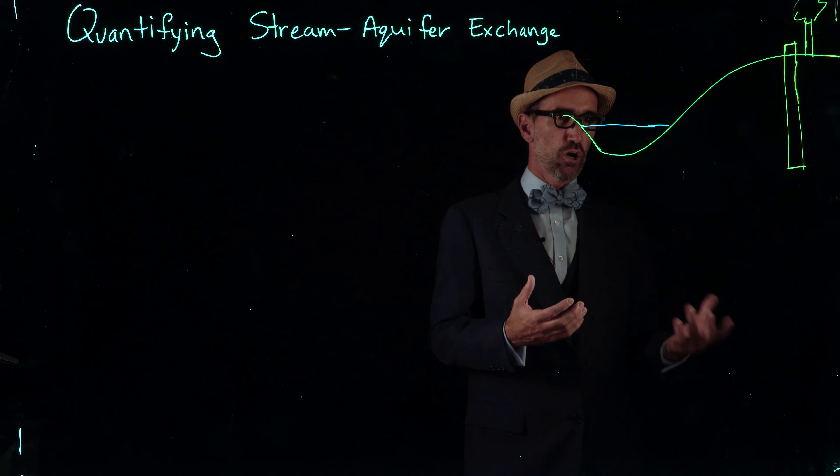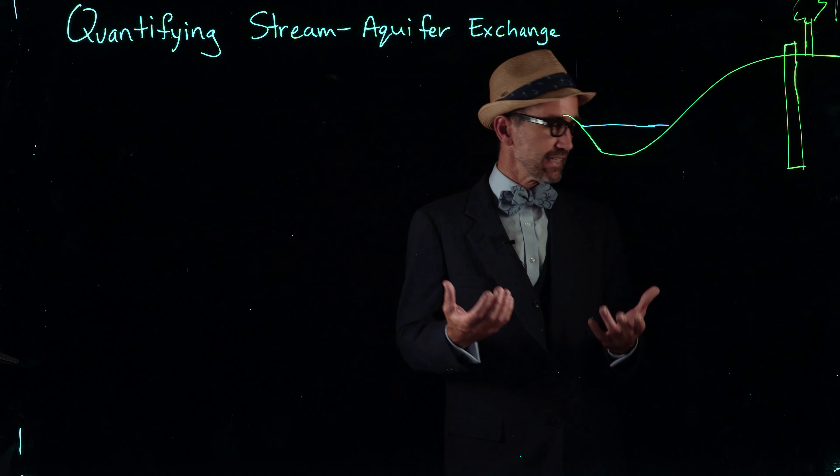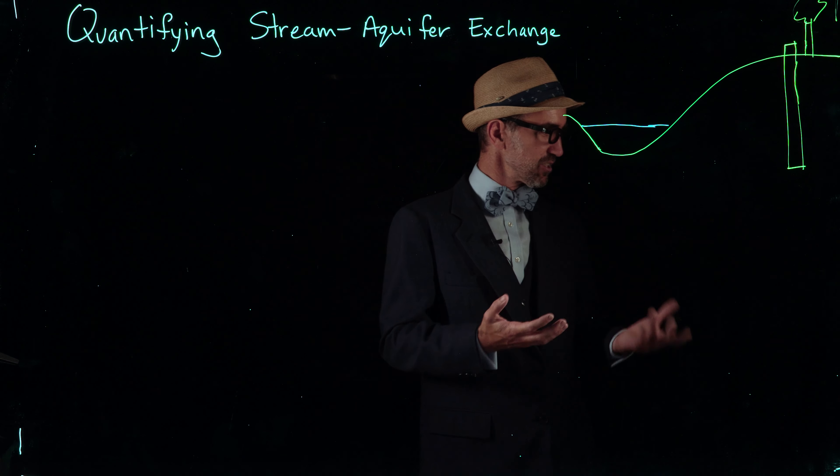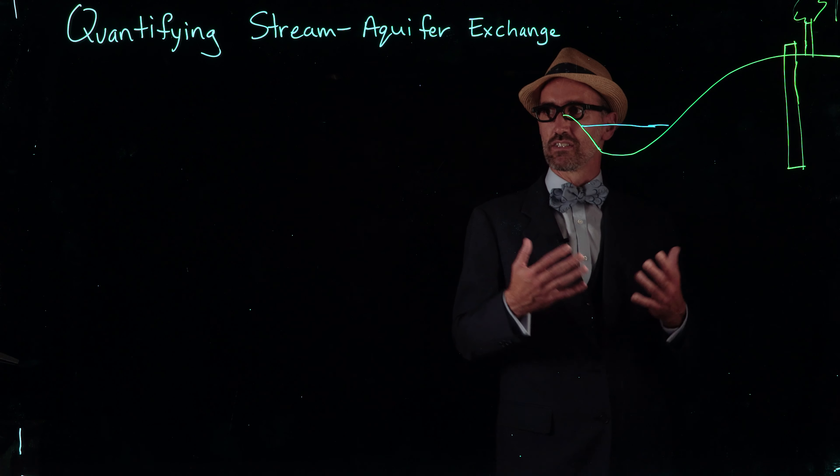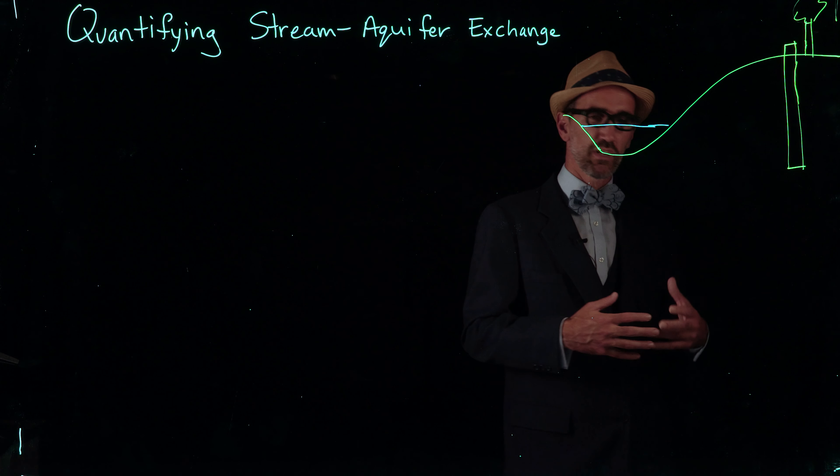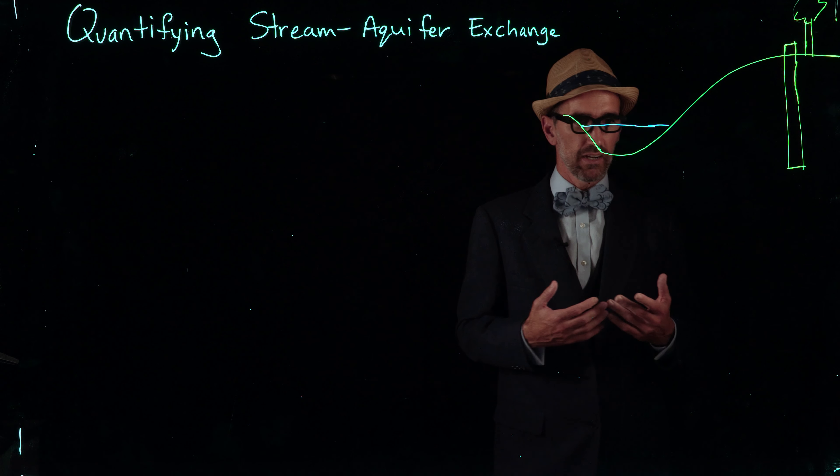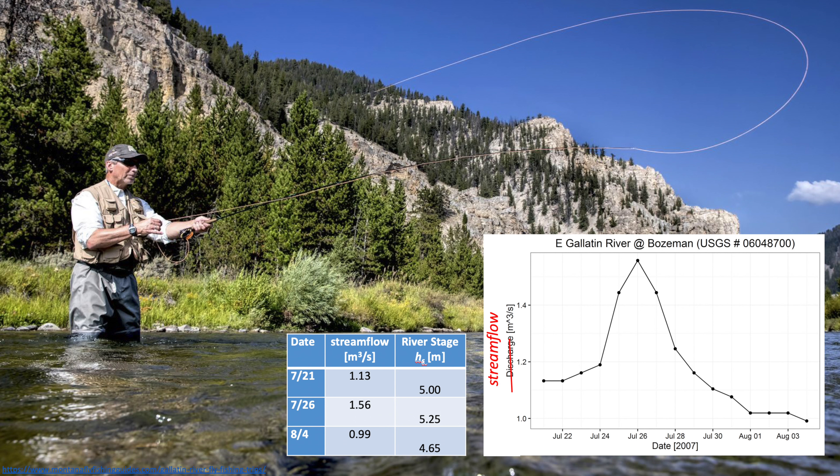I want you to imagine the flow of groundwater between this river, because groundwater actually supports salmon in many of these streams. In the Gallatin River there was a storm in July of 2007, and we're going to track the exchange between groundwater and surface water before, during, and after this storm.